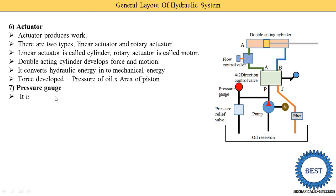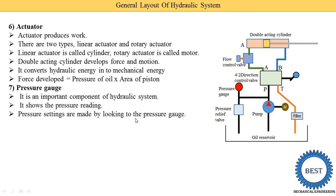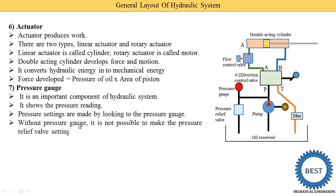The next component is the pressure gauge. It is an important component of the hydraulic system that shows a pressure reading. Without measuring pressure, the pressure relief valve cannot operate, and if pressure increases beyond limits, there are chances of system collapse, damage, or leakage. Pressure settings are made by looking at the pressure gauge. Without the pressure gauge, it is not possible to make pressure relief valve settings or unloading valve settings, because the pressure relief valve requires pressure sensing which is done using the pressure gauge.